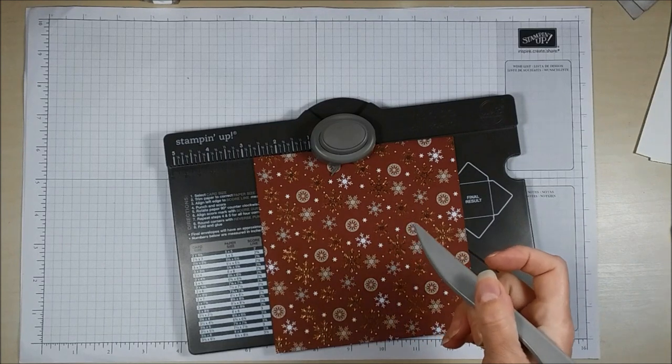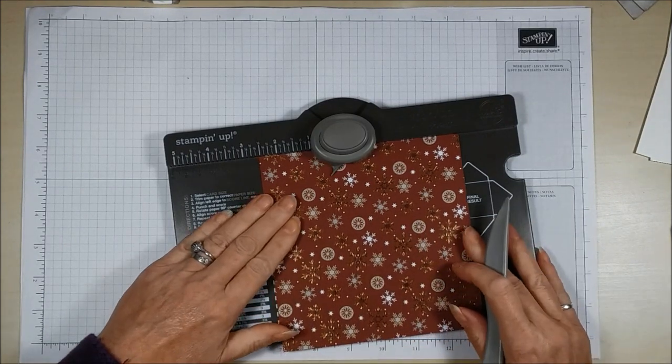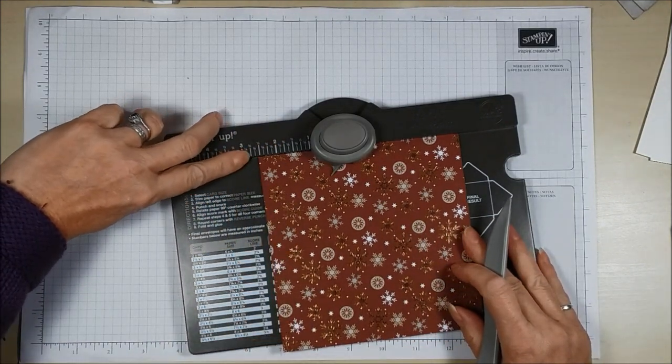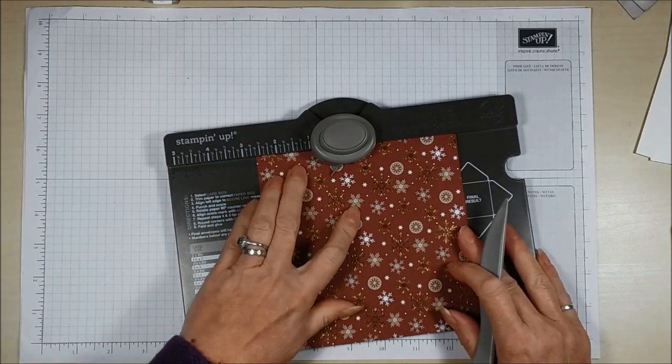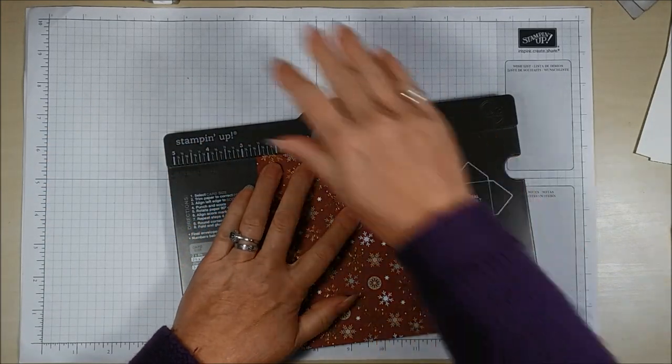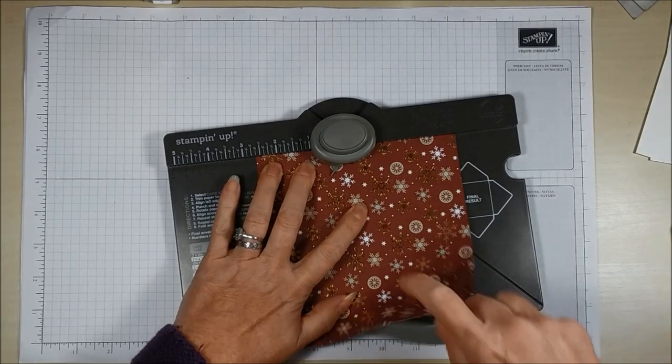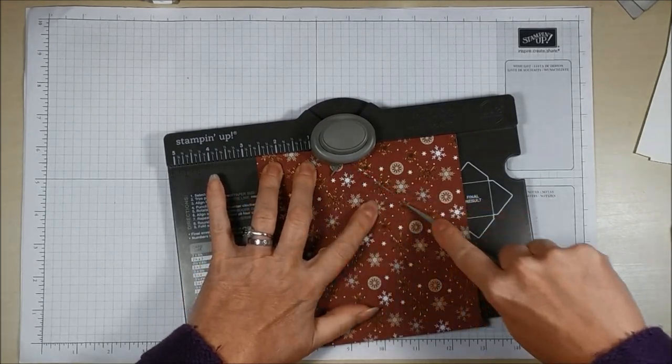With this I'm going to score the first line at two and five eighths. So we're looking for two and five eighths, and that's the only measurement that you need. We're going to punch and we're going to score.